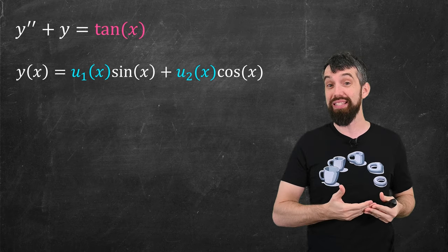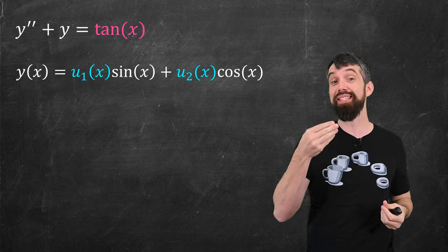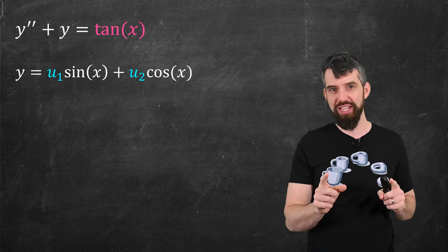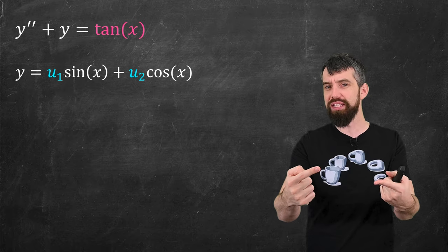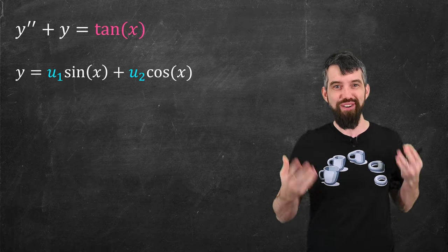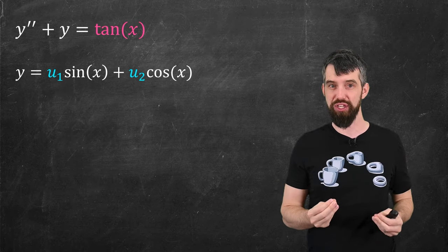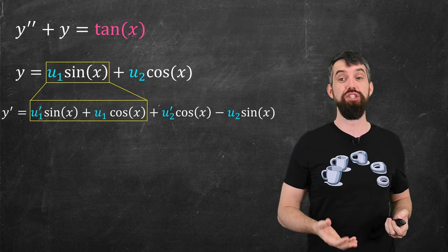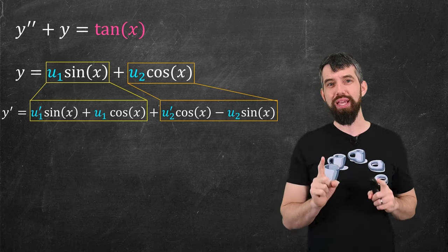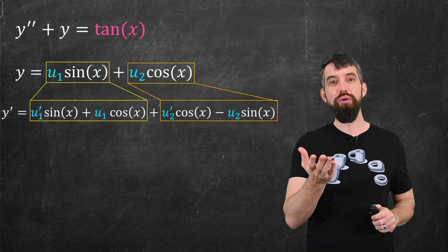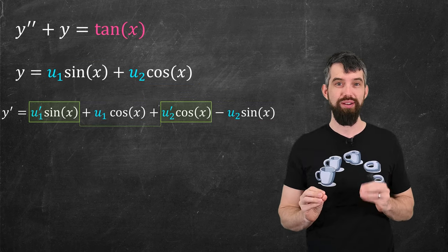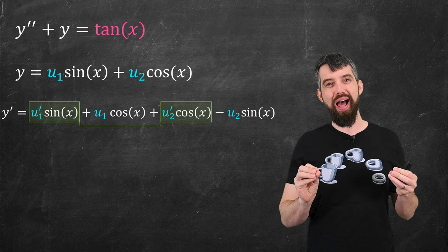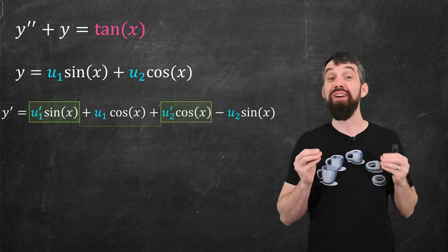What I really mean is: let's take that guess and substitute it into the differential equation and see if we can find a u1 and a u2. First thing I do is a bit of simplification — I'm going to remove the x's, so u1 and u2 are functions of x but I'll write them in shorthand. Now I can take my derivative. The first derivative is just two different product rules. When I look at this derivative, I notice there are two terms that involve not u1 and u2 but their derivatives. I'm going to do a little bit of a funky trick here.